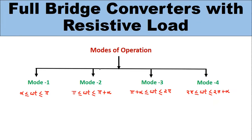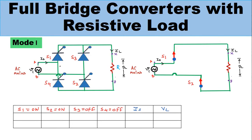This bridge converter has four modes of operation. Mode 1 goes from ωt = α to π. Mode 2 goes from ωt = π to π + α. Mode 3 goes from ωt = π + α to 2π. Mode 4 goes from ωt = 2π to 2π + α.